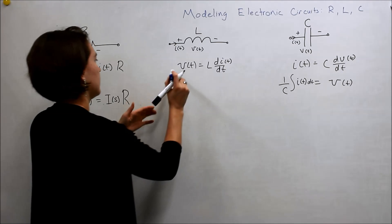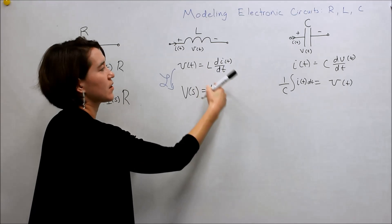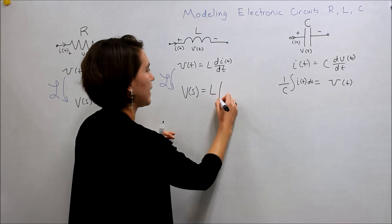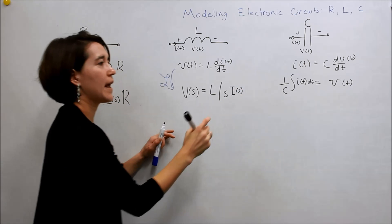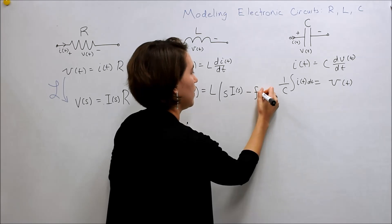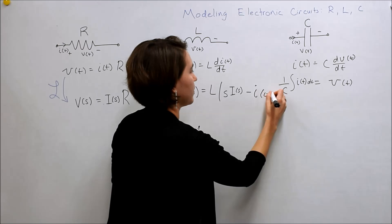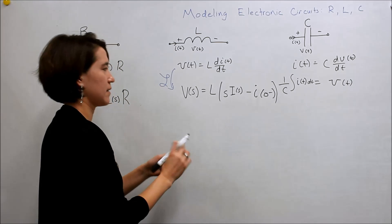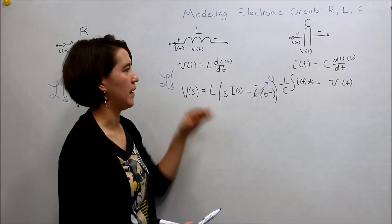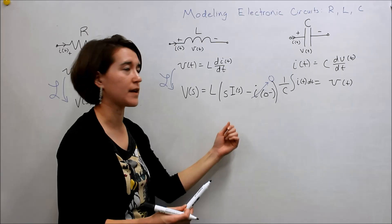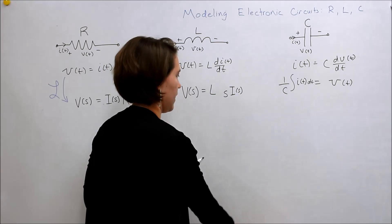We're going to do the same thing with the inductor — take our Laplace. Here again we get V of S. L is our constant, and this time we're looking at the derivative, so we have to look back at our table. From the Laplace transform table we get S times I of S. Technically we need to subtract I of 0 from the negative side, but in all of the equations we're going to work with, this will almost always be 0. We just assume it's 0 because it's starting from nothing and then initializing the system, so most of the time we can just ignore this part and write V of S equals Ls·I of S.